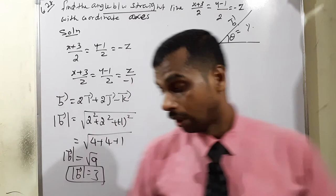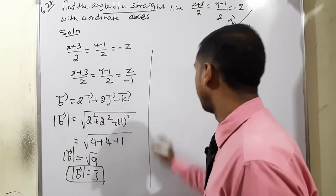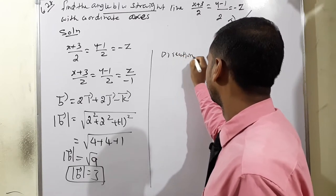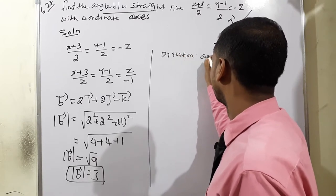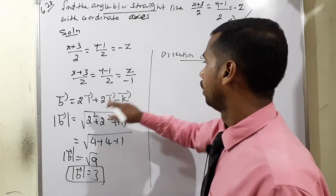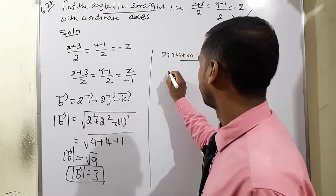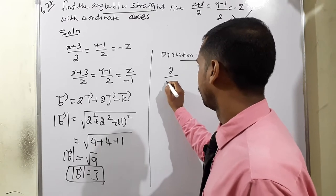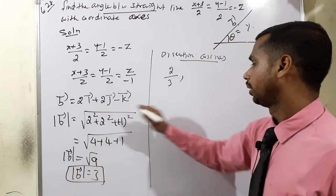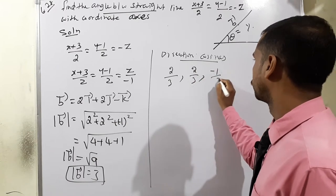Now, after getting the modulus, we find the direction cosines. The direction cosines are the coefficients divided by the modulus: 2 by 3, again 2 by 3, and minus 1 by 3.